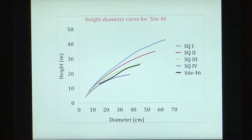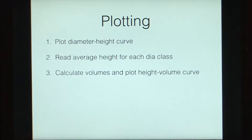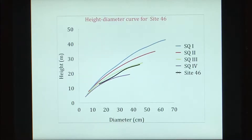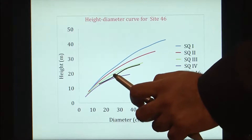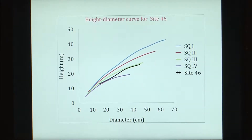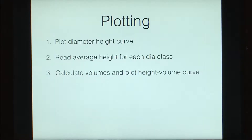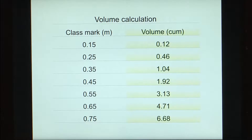After you have your diameter-height curve, you will read the average height for each diameter class to get a typical height for each class. Then you calculate the volumes using the class mark, the known form factors, and the heights, and plot the height versus volume curve.